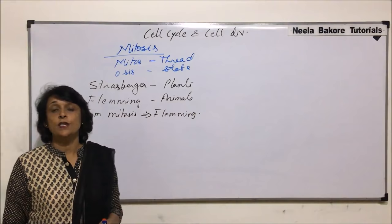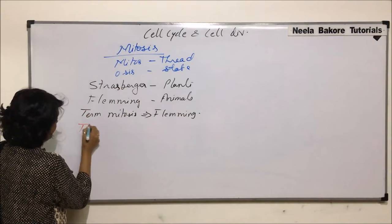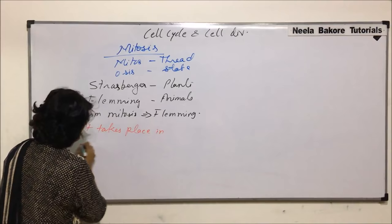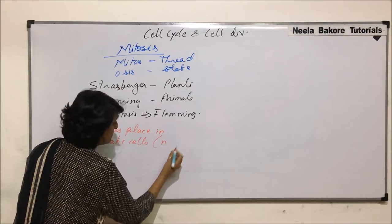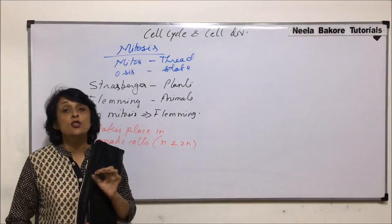In which type of cells does this division take place? This division takes place in somatic cells, and those somatic cells can be haploid as well as diploid. However, mitosis also takes place in germ cells.